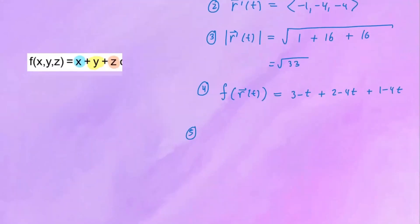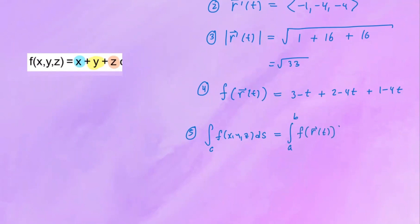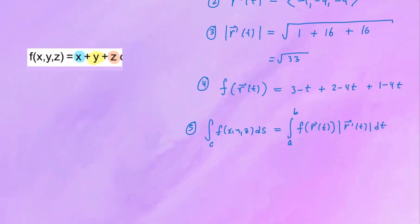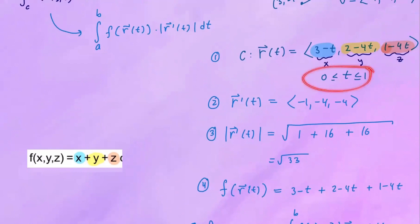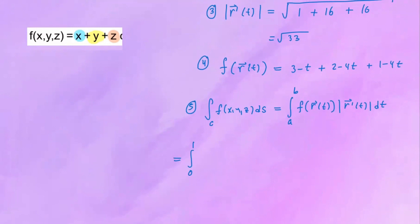Step 5: we evaluate the line integral along C of F of X, Y, Z dS, which equals the integral from A to B of F of R of T times the magnitude of R prime of T dT. This is the integral from 0 to 1, and combining like terms in F of R of T: the constants 3 plus 2 plus 1 give 6, and the T terms give negative 1T minus 4T minus 4T, which is negative 9T. So the integrand is 6 minus 9T.